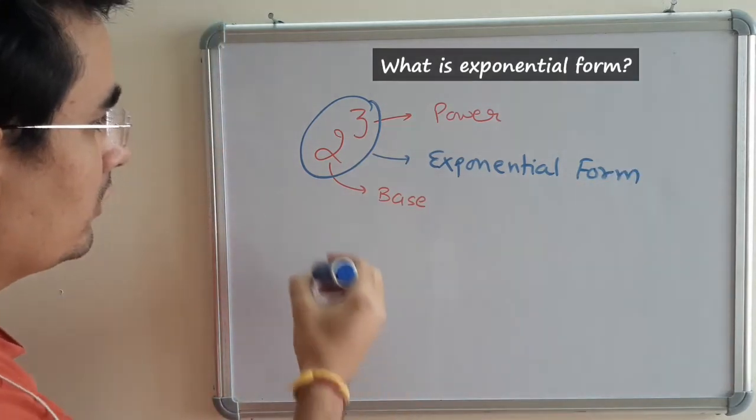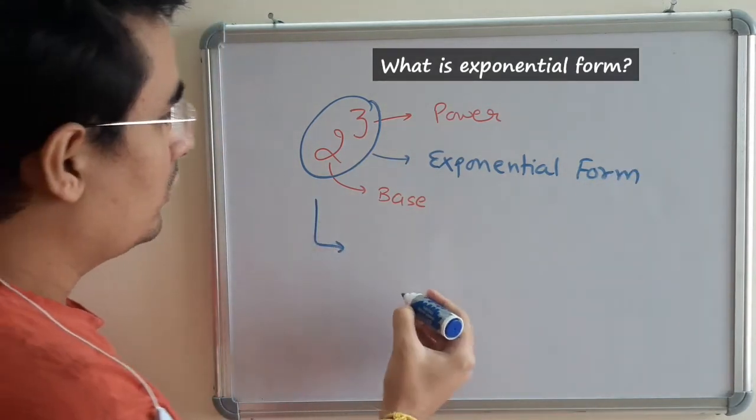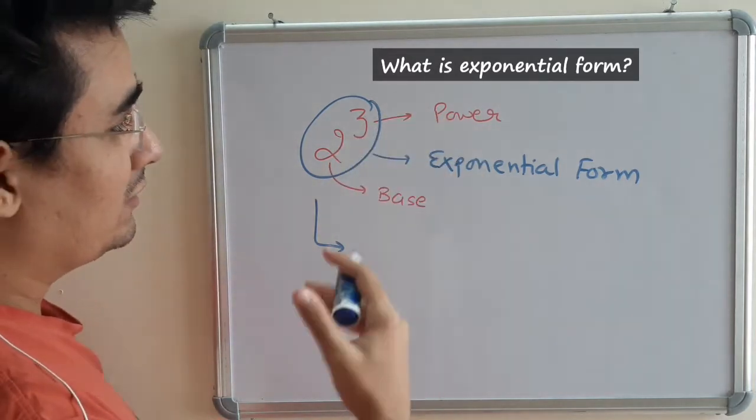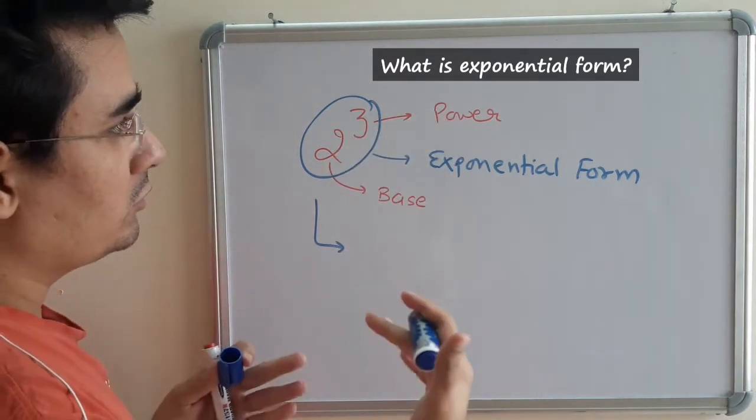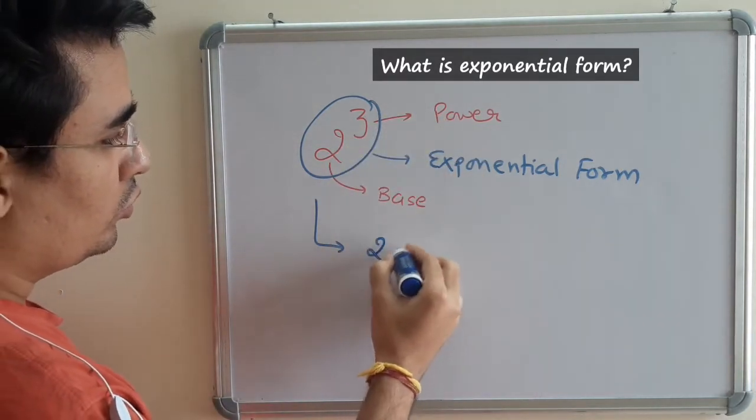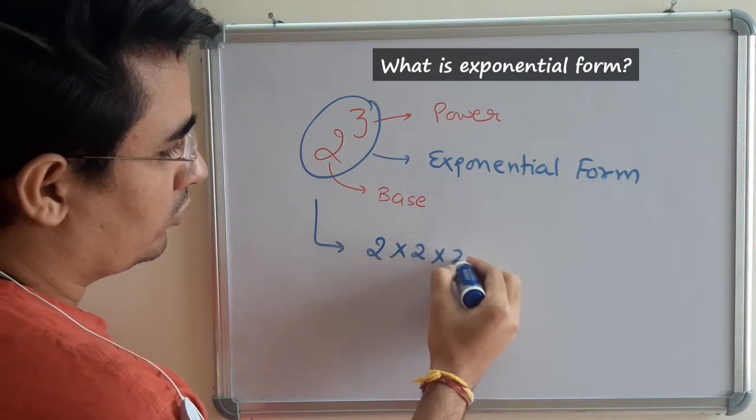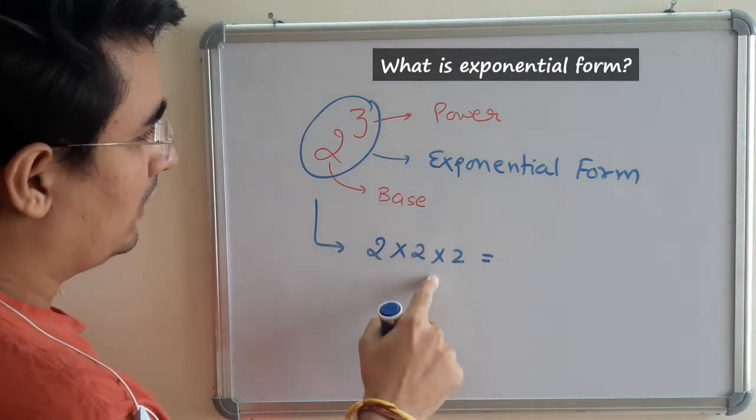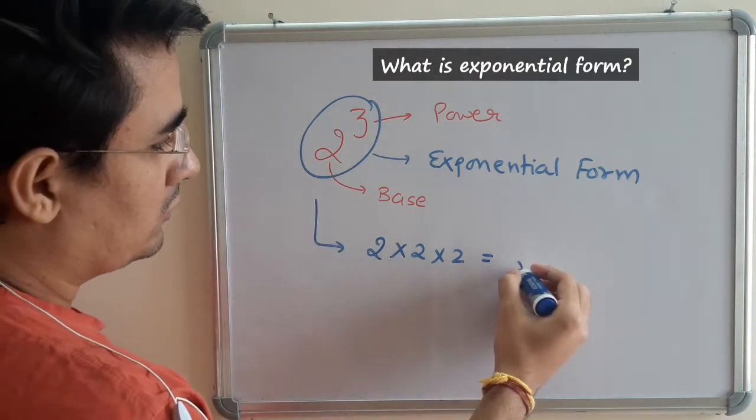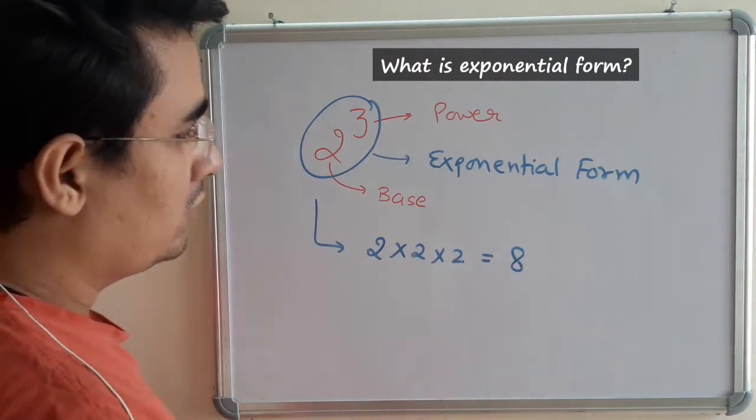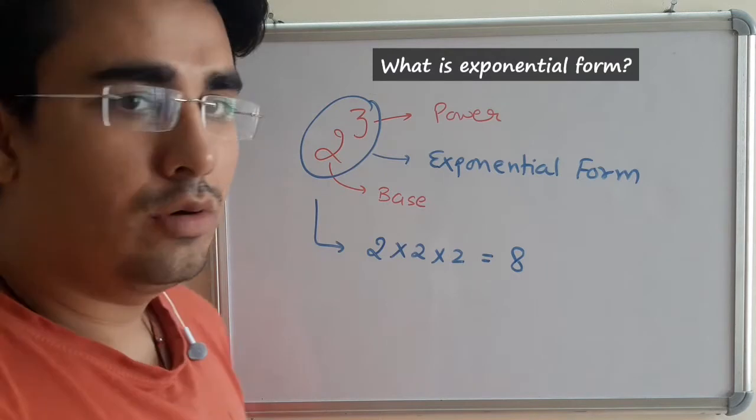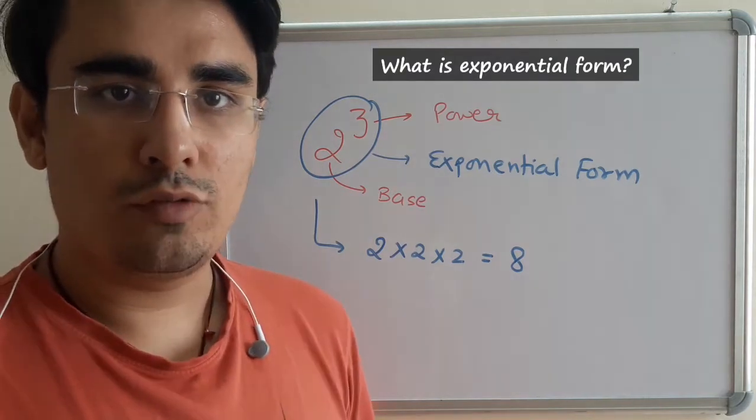Let us try to understand what this means. 2 raised to the power 3 means 2 times 2 times 2, so the answer is 8. This is the basic meaning of exponential form.